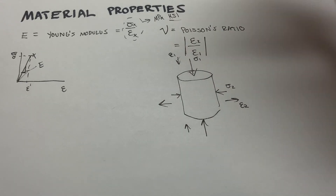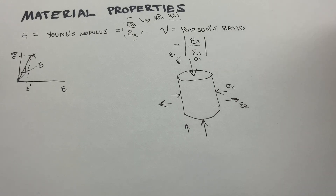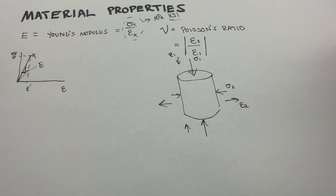You can convert those to KSI if you want — some of us in the States use that. But those are two of the most basic material properties. Other ones to talk about might be the bulk modulus and the shear modulus, and these two — Young's modulus and Poisson's ratio — can be used to find those.